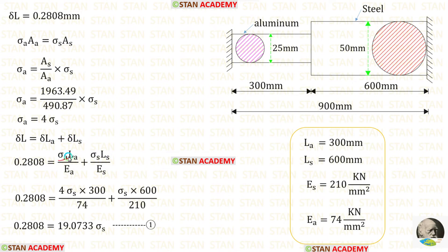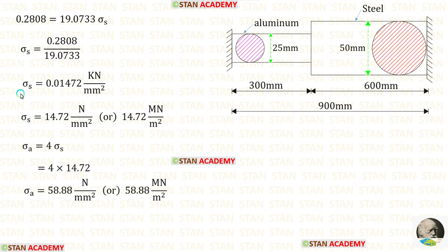For sigma_A, we can apply 4 sigma_S. After the calculation, we are getting this. Let us keep this as equation number 1. For sigma_S, we are getting this. We can convert this value either in Newton per millimeter squared or Mega Newton per meter squared. We know that sigma_A is equal to 4 sigma_S. Let us multiply sigma_S with 4. When we do that, we are getting sigma_A.